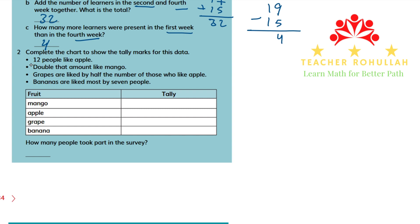To find out the number of mango, we have to consider the number of apples, because it says double that amount like mango. 12 people like apple, and double 12 is 24, so the number of people who liked mango is 24. Apple is already given as 12.